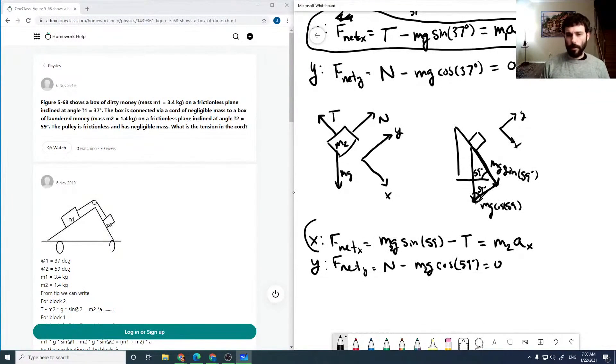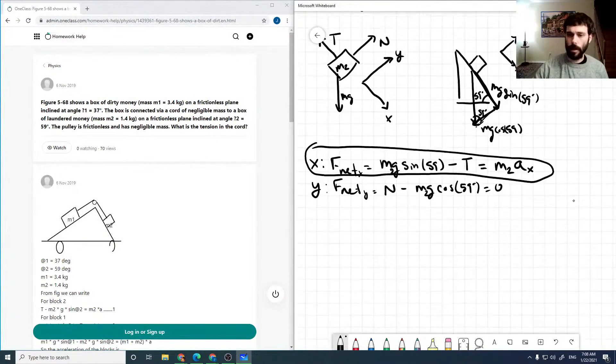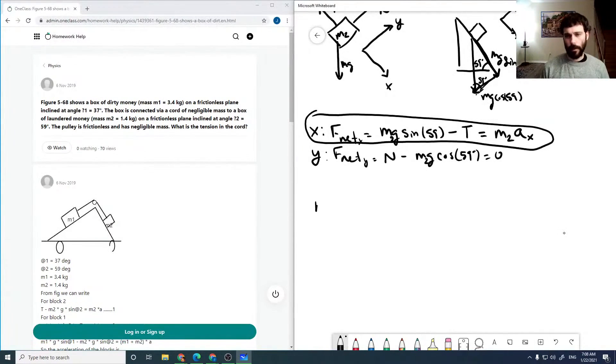I'm going to restate them just so we have them. We've got T minus m1 g sine 37 is equal to m1 a x, and we've got m2 g sine 59 minus T is equal to m2 a x.